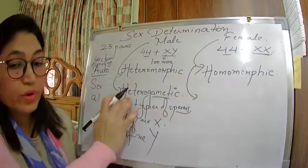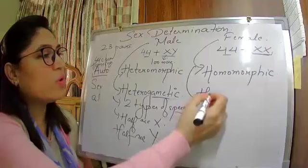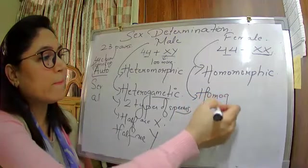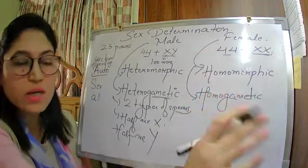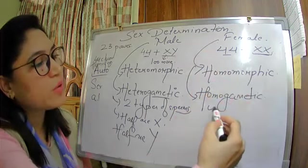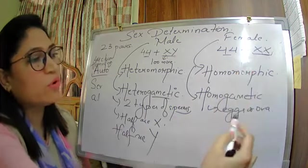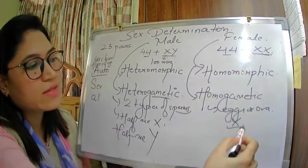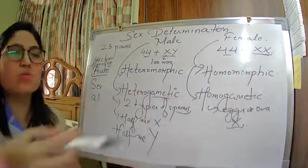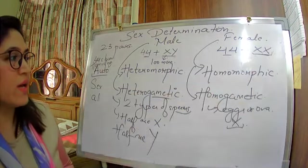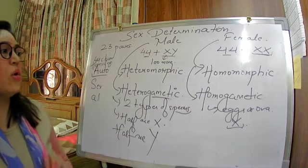If males are heterogametic because they produce two types of sperms, females are homogametic — they produce only one type of egg that contains only X chromosomes. So males are heteromorphic as well as heterogametic, and females are homomorphic as well as homogametic.